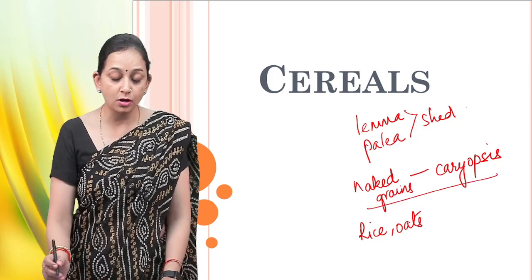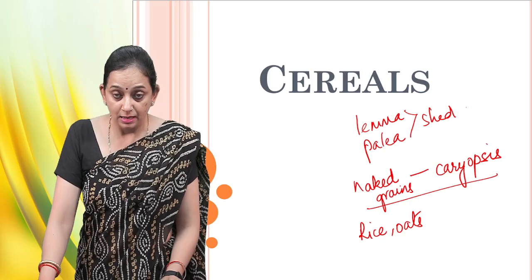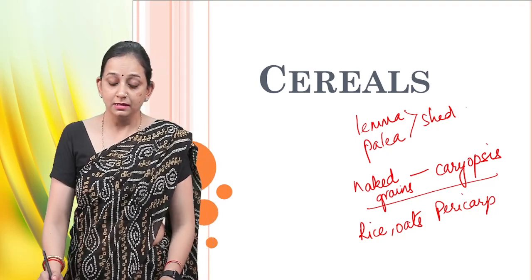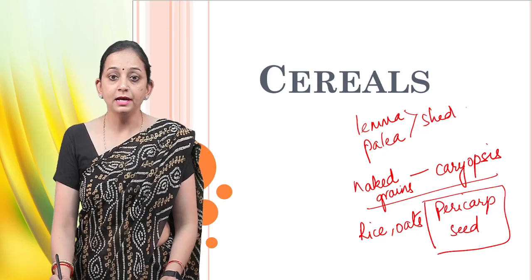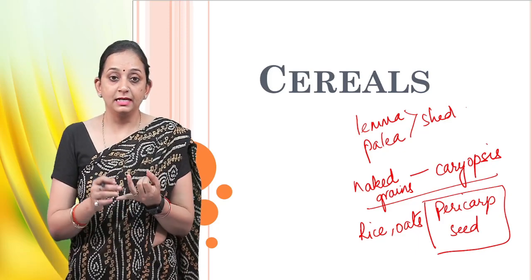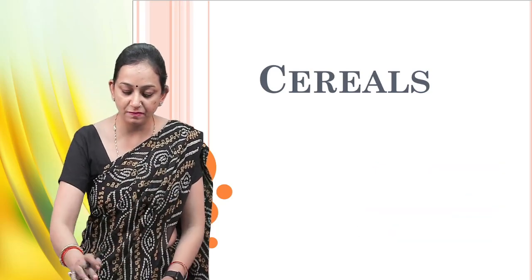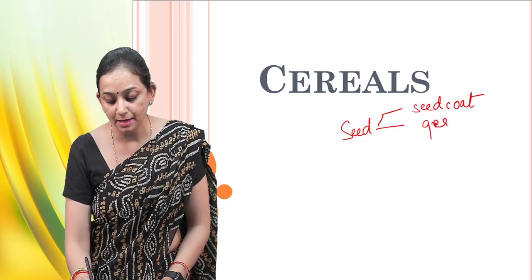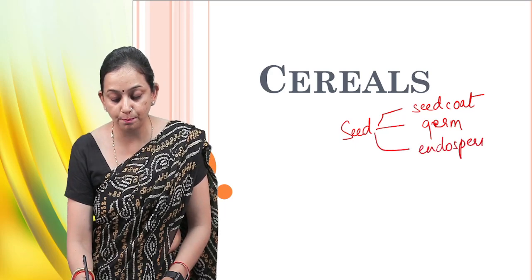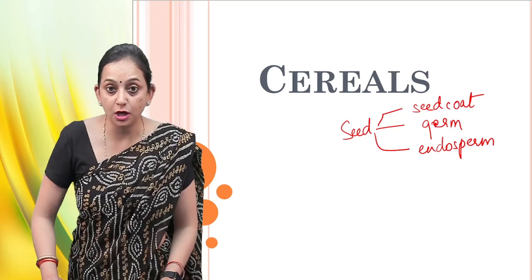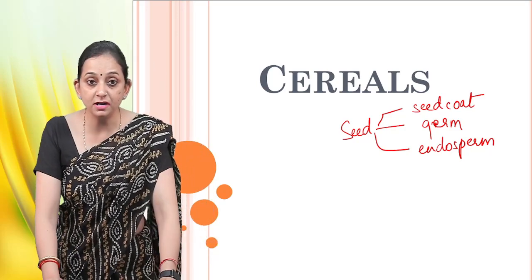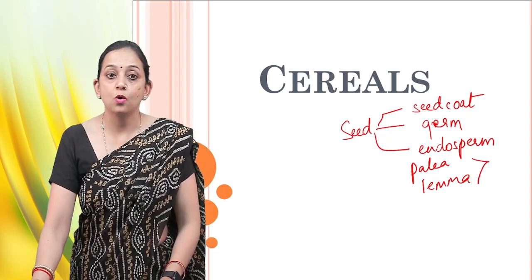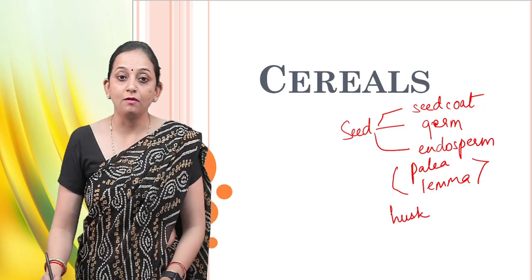The naked caryopsis consists of a coat known as the pericarp. Apart from the pericarp, there is a seed. The seed consists of a seed coat, the germ, and the endosperm — so the outermost seed coat, then the germ, and the innermost endosperm. When grains are covered, they have the pallea and lemma, as in rice and oats, which form the husk of the grains.